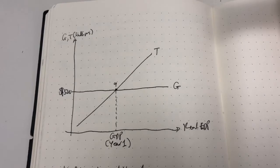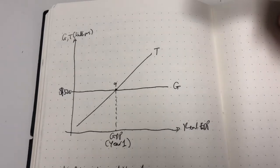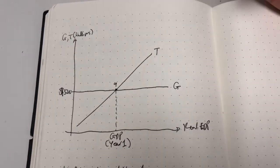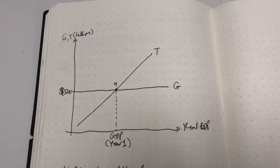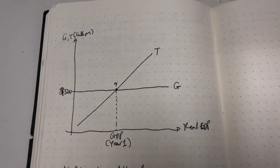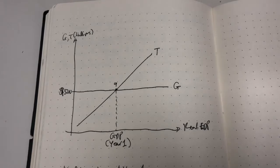Economists use the cyclically adjusted budget to evaluate whether fiscal policy is expansionary, contractionary, or neutral. The idea is to compare actual government expenditures with the tax revenues that would have occurred if the economy had achieved full employment GDP levels.